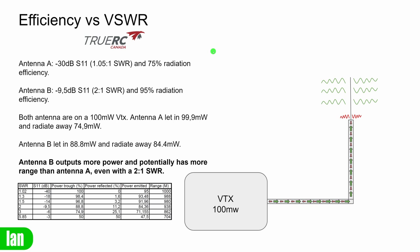This is where things get quite interesting and shows that SWR alone isn't the major factor affecting performance. Take two antennas: Antenna A has an SWR of 1.05 to 1 (S11 of minus 30 dB) and 75% radiation efficiency, and Antenna B has an SWR of 2 to 1 (minus 9.5 dB) and 95% radiation efficiency. Both are on 100 milliwatts. Antenna A lets in 99 milliwatts and radiates 74.9 milliwatts, but Antenna B lets in less power — 88.8 milliwatts — yet actually radiates 84 milliwatts because it has much better efficiency. This shows you can have an antenna with higher SWR that provides better overall performance.